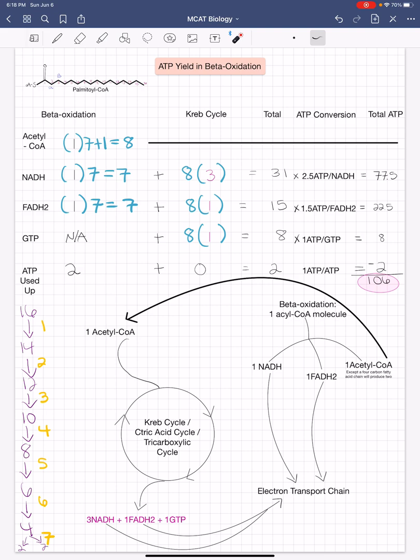Next, for each molecule of GTP is converted into 1 molecule of ATP. Therefore, we multiply 8 molecules of GTP by 1 molecule of ATP, which will give us 8.